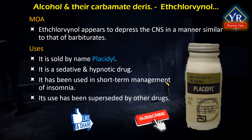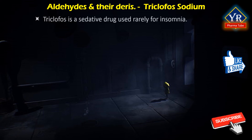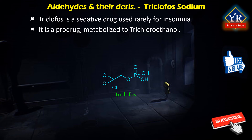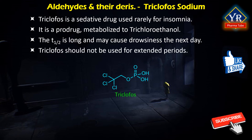Moving on to the third class of miscellaneous agents, aldehydes and their derivatives. The first example in this class is chloral hydrate. Chloral hydrate is a sedative drug used rarely for treating insomnia. It is a prodrug which is metabolized in the liver into the active drug trichloroethanol. The half-life of chloral hydrate is fairly long and it may cause drowsiness the next day. Trichloroethanol may cause liver damage and chloral hydrate should not be used for extended periods. It is no longer available in the US.